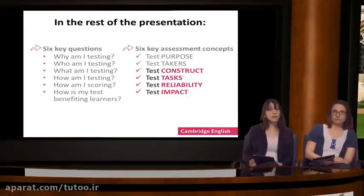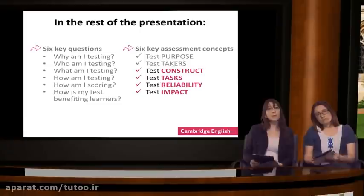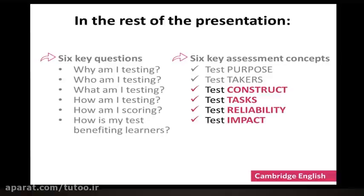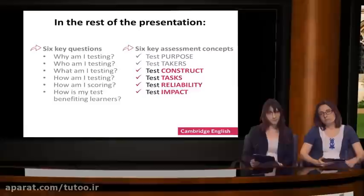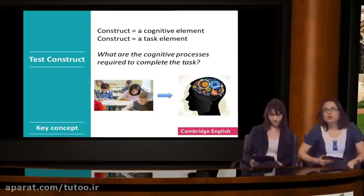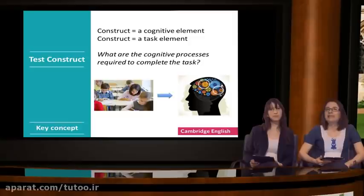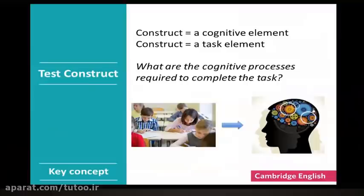So far, we've looked at the six key questions and concepts. Now in the rest of the webinar, we would like to focus in a bit more detail on four of these concepts. These are test construct, test tasks, test reliability and test impact. Now let's start with test construct. As a reminder, test construct refers to the sometimes hidden ability we're trying to measure. A construct has two elements: a cognitive element and a task element. In other words, we can make the cognitive ability observable through a task.